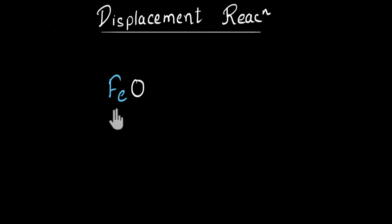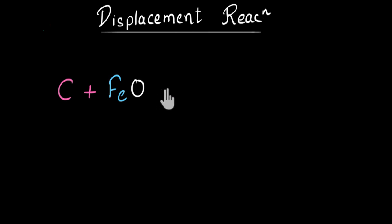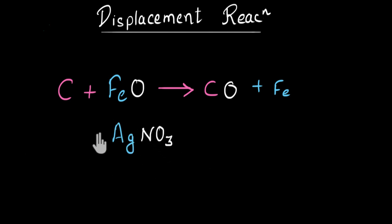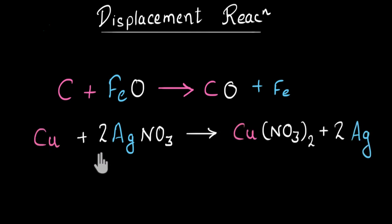The question is, how do we get iron out of iron oxide? One way is to heat it with carbon. Carbon, being more reactive, will kick out the iron from its oxide. Finally, we get carbon monoxide and iron is separated out. Similarly, if you want silver but all you have is silver nitrate, you can react it with copper. Copper, being more reactive, will kick out the silver from its nitrate. Finally, we get copper nitrate and silver is separated out — ready to make jewelry.